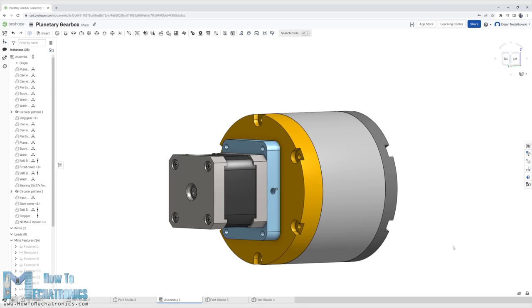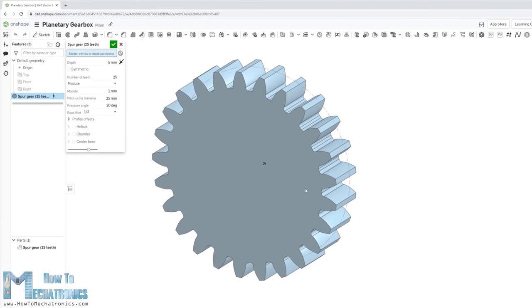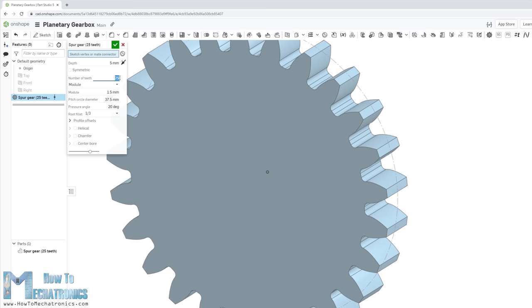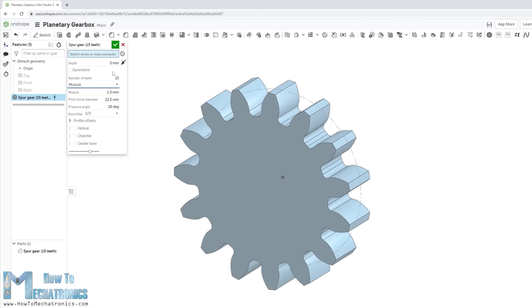With Onshape it's quite easy to generate gears with the help of the Feature Scripts library. With the Spark Gear Feature Script we can generate any type of gear within seconds. We just have to enter our parameters. The module will be 1.5 and the number of teeth for the sun and the planet gears will be 15.